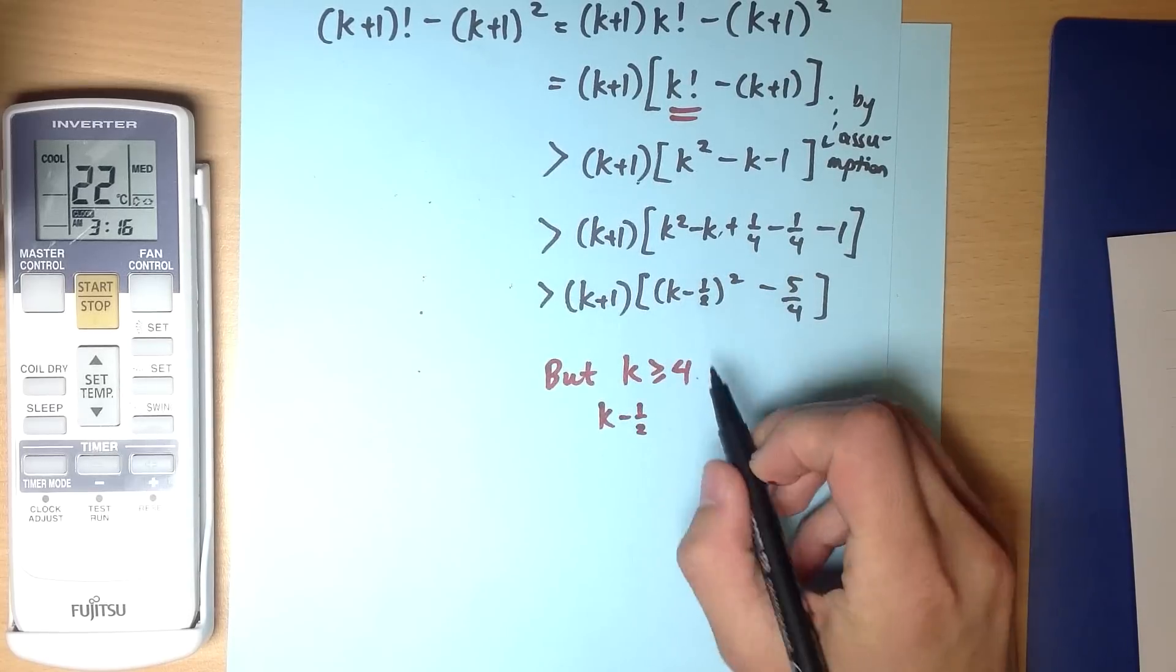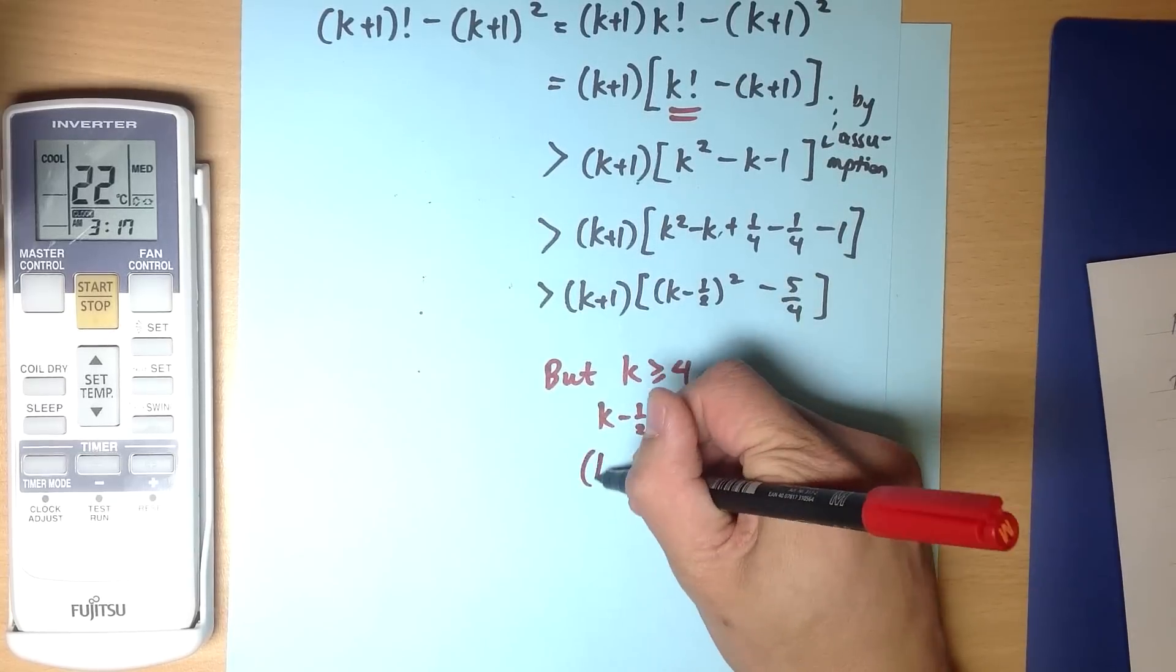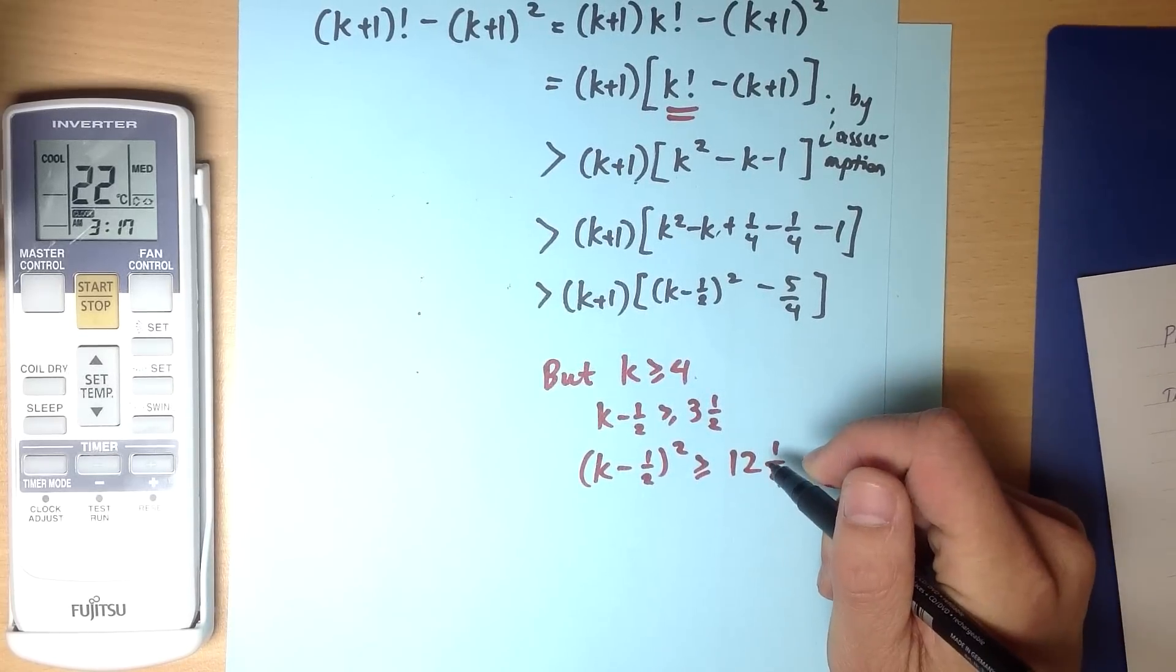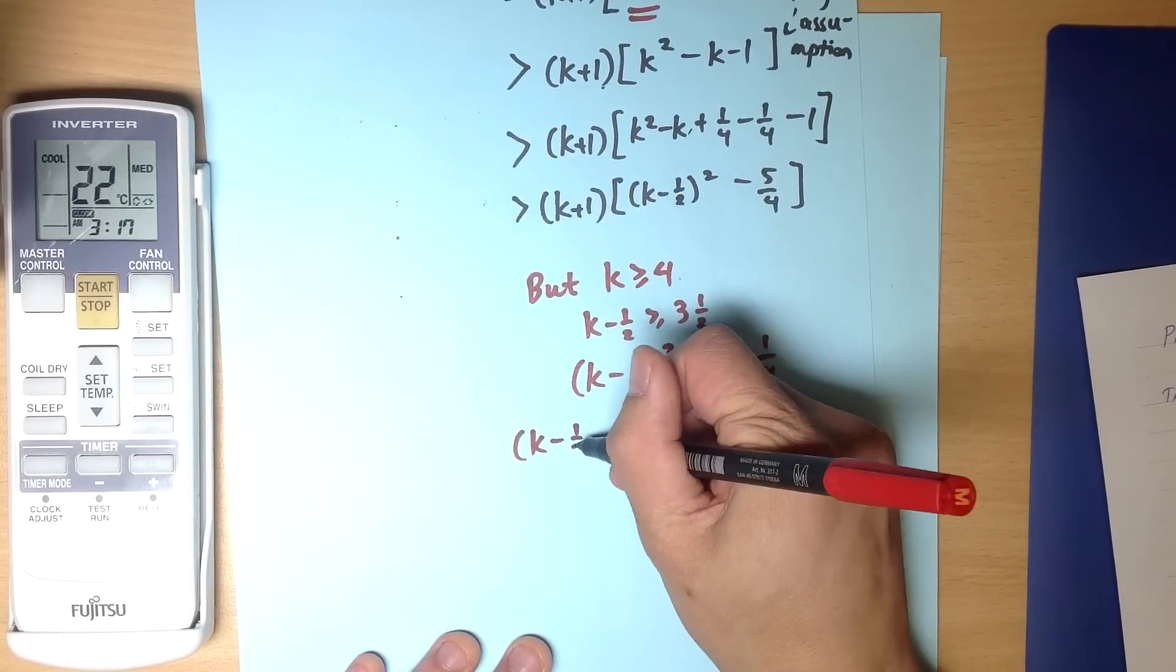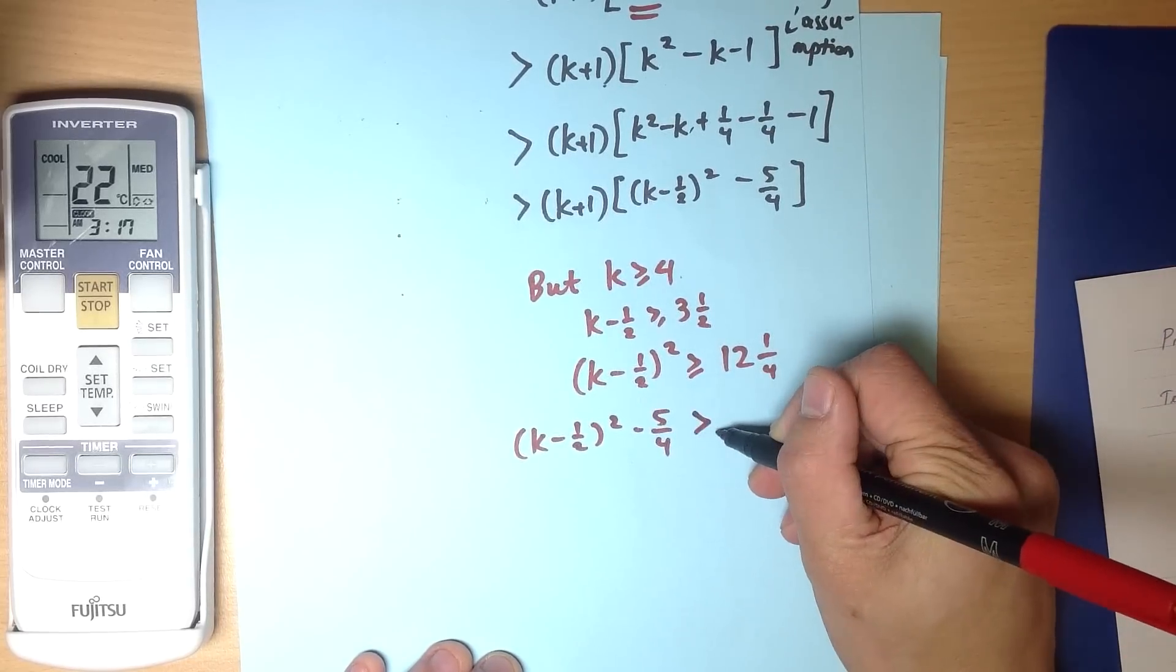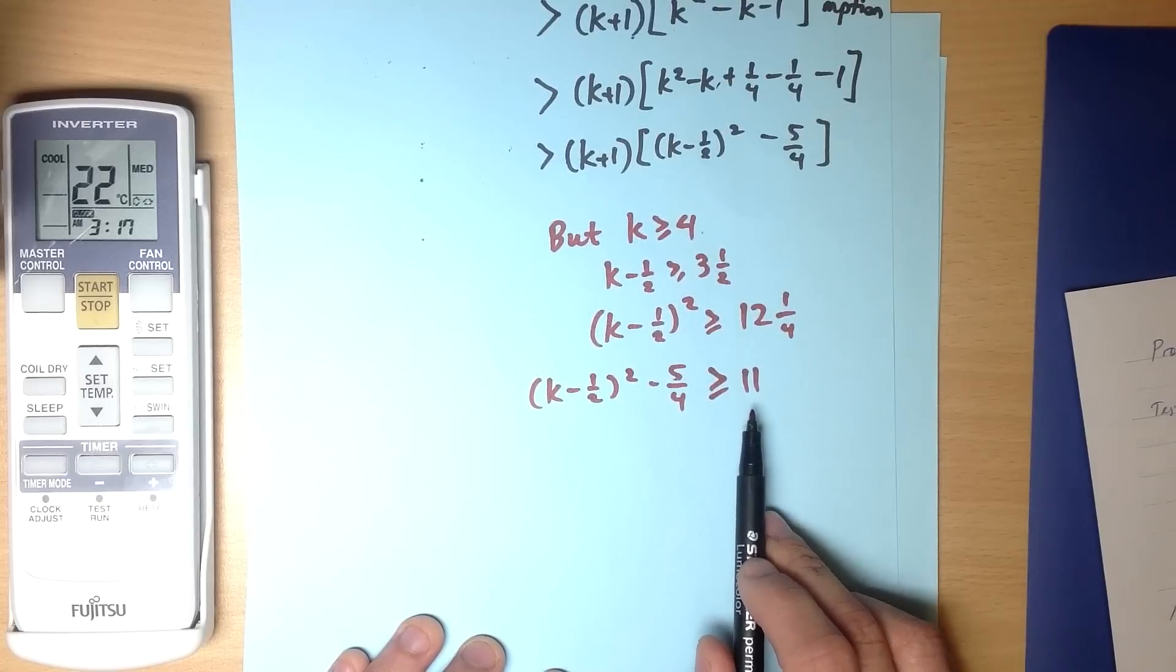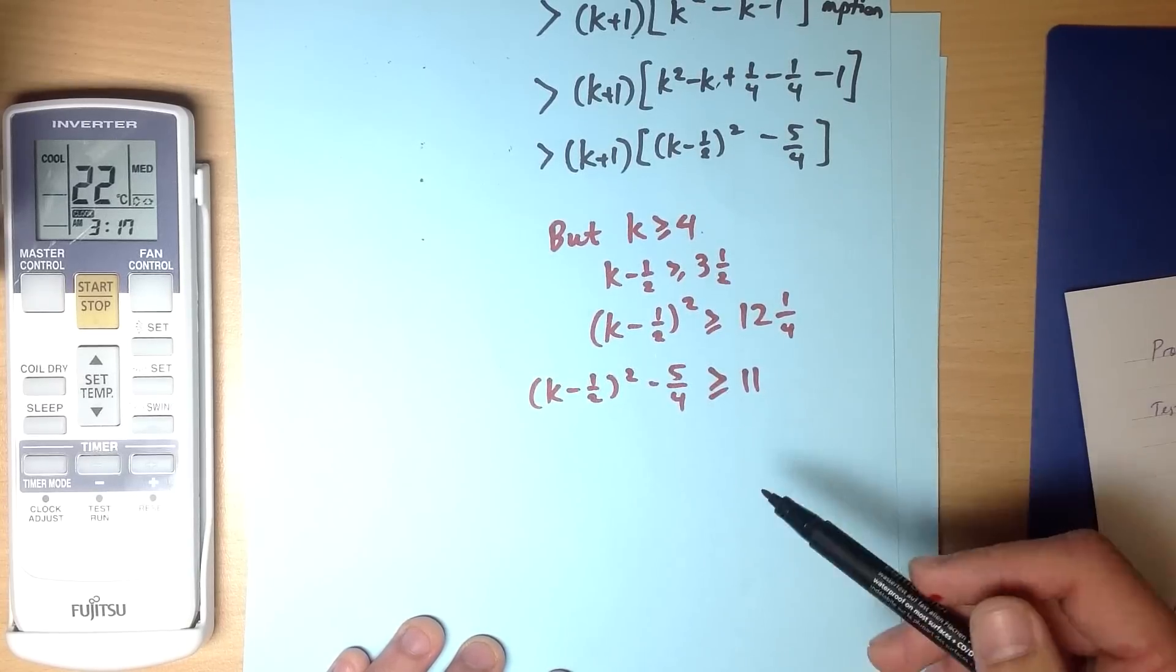So k minus a half, that's what I've got there. If you subtract half from both sides, you get 3 and a half. If I square both sides, which you do have to be careful with with inequalities, but here it's going to be fine, it should be greater than 12 and a quarter. And now if I subtract the 5/4 over here, (k - 1/2)² - 5/4 should be greater than or equal to 11. Which means that this number is a pretty big number. The smallest it can possibly be is 11, and depending on the value of k, it could be bigger numbers.